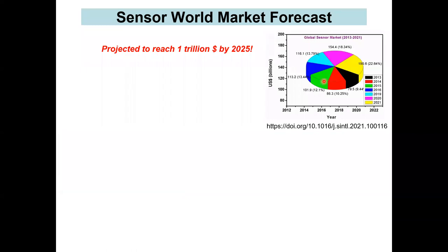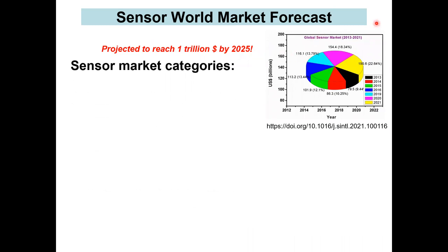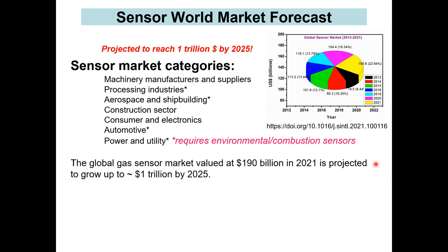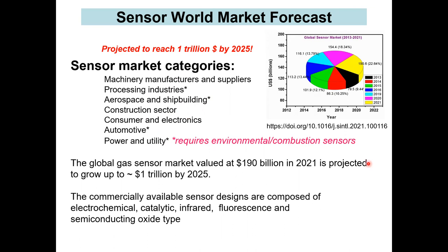In terms of the market forecast for chemical sensors, it's projected to grow. In fact, in 2021 the market size was about $190 billion, and it's projected to grow to $1 trillion by 2025. If you categorize the sensor market by application and industry, there's a long list, and I've put asterisks on the industrial applications that require environmental or combustion sensors — the ones we mostly focus on.